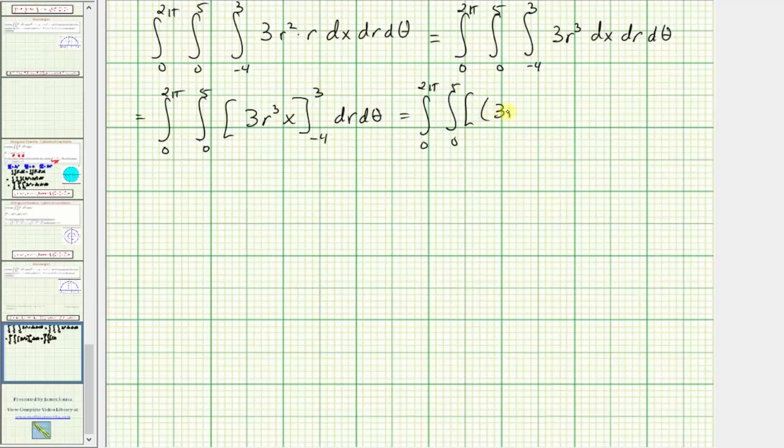We have 3r³ times 3 minus, when x is -4, we have 3 times r³ times -4. So we have 9r³ + 12r³, which gives us 21r³.